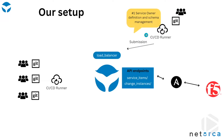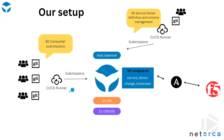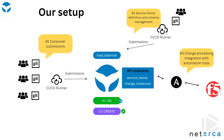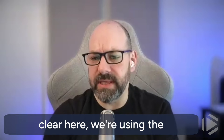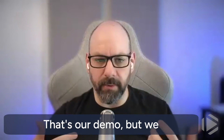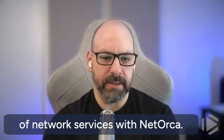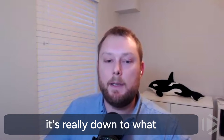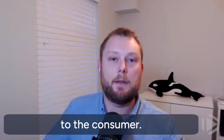So walk us through what the demo is going to show us. Basically, we'll go through three phases. First, we'll show how a service owner defines and offers a service onto NetOrca via Git repository. Then we'll show how consumers submit and consume services via Git repos. Finally, we'll show how the service owner takes those changes and pushes them onto a device — in this case, deploying a load balancer onto an F5. This is our demo, but we could be doing any number of network services with NetOrca. It's designed to be as flexible as possible.